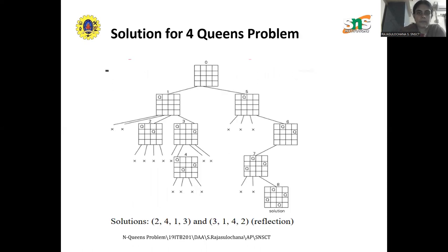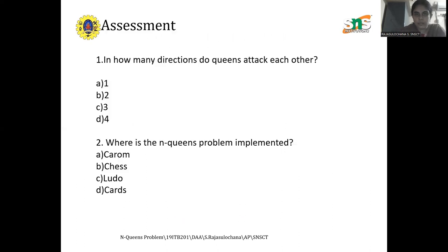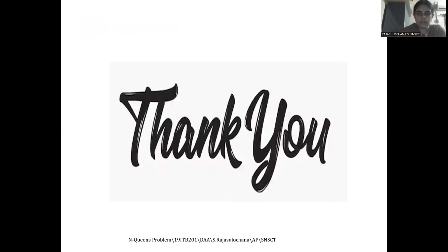This is the state space tree for the 4-Queens problem, and similarly this is the state space tree for the 8-Queens problem. We can apply this approach for any value of N. I hope you understand this topic — thank you.